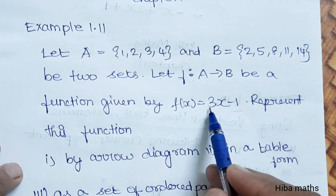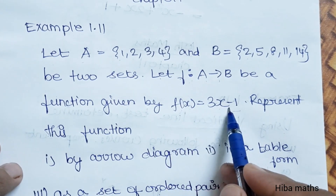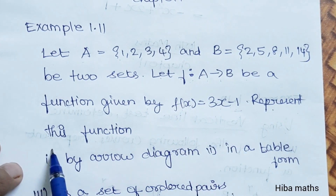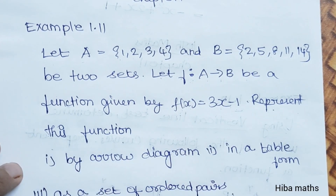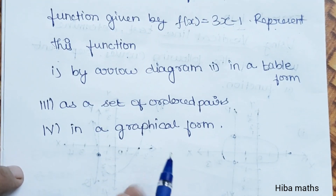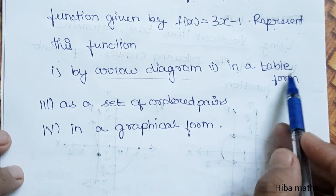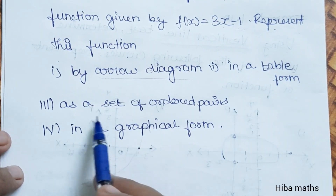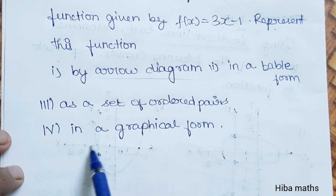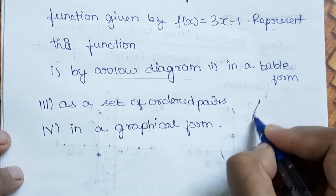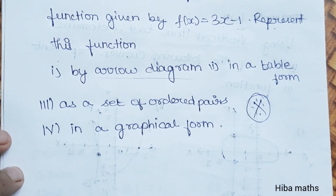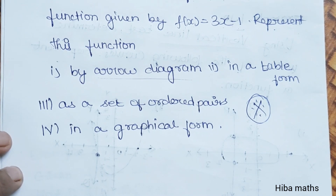This function represents 3x minus 1, shown by arrow diagram, table form, set of ordered pairs, and graphical form. This is a 5-mark main question.